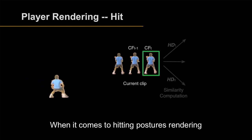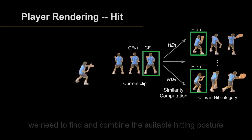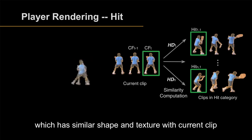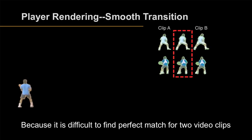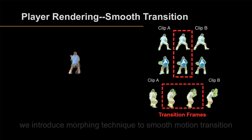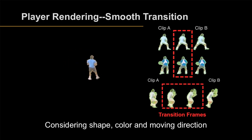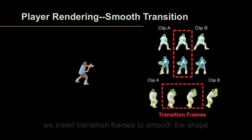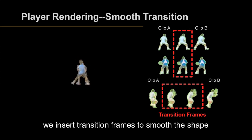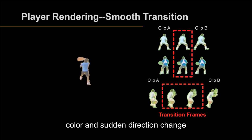When it comes to hitting posture rendering, we need to find and combine a suitable hitting posture that has similar shape and texture to the current clip. Because it is difficult to find a perfect match for two video clips, we introduce a morphing technique to smooth motion transitions after selecting suitable cascading clips. Considering shape, color, and moving direction, we insert transition frames to smooth any sudden shape, color, and direction changes.